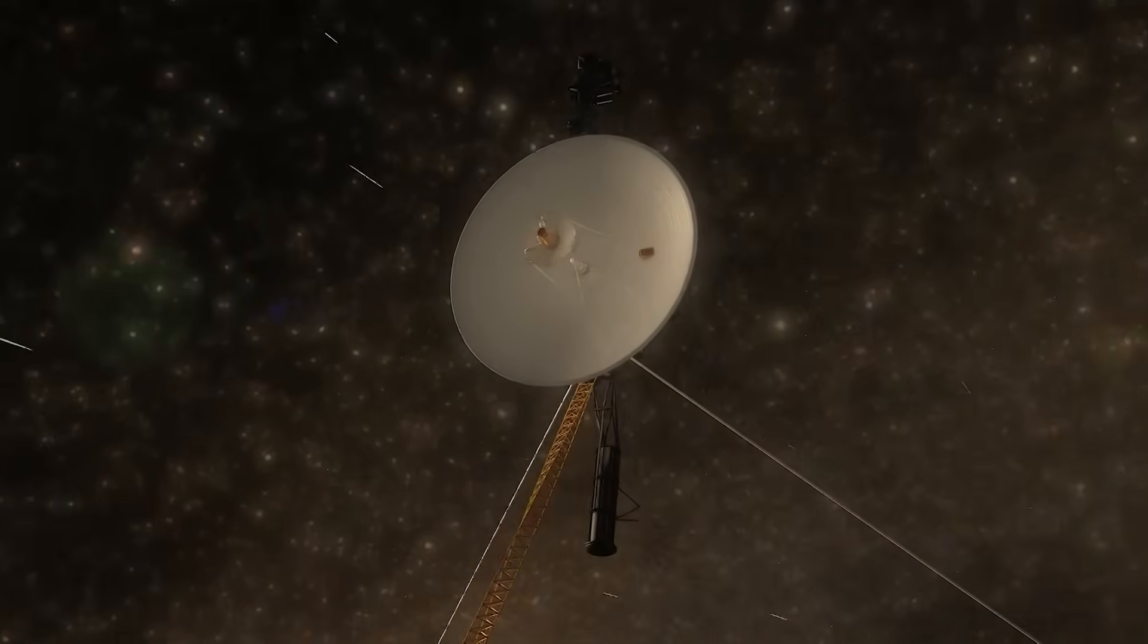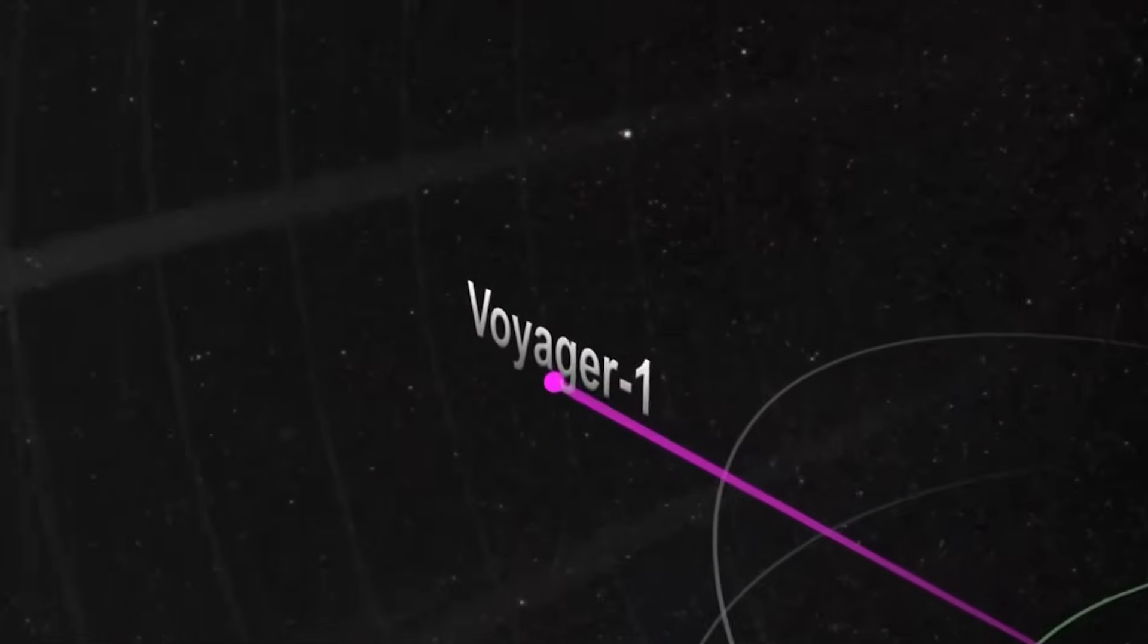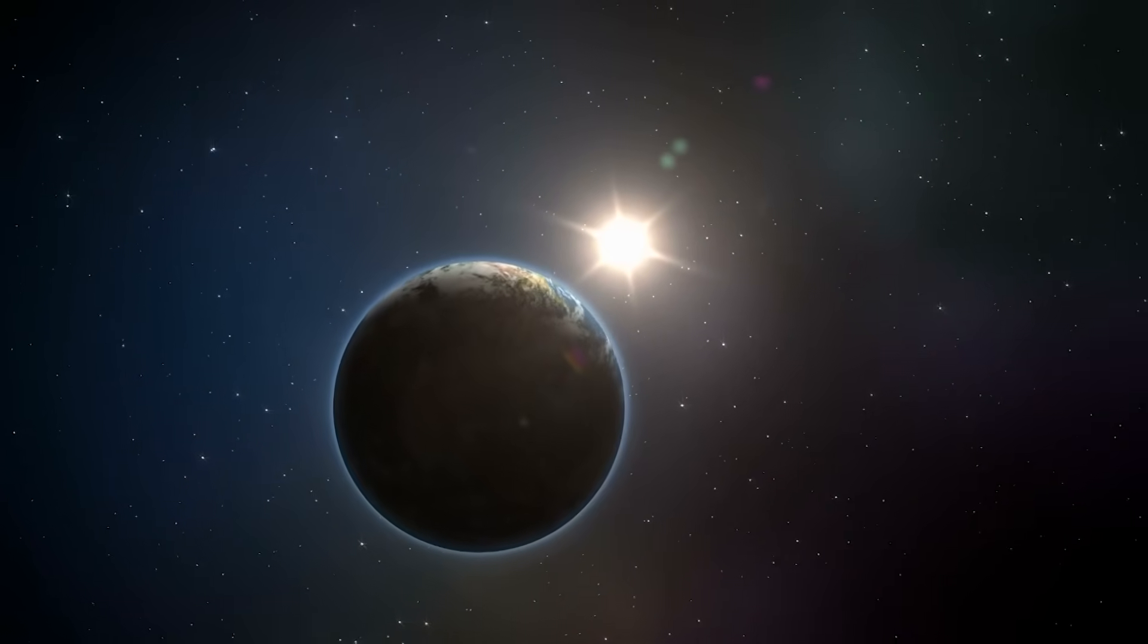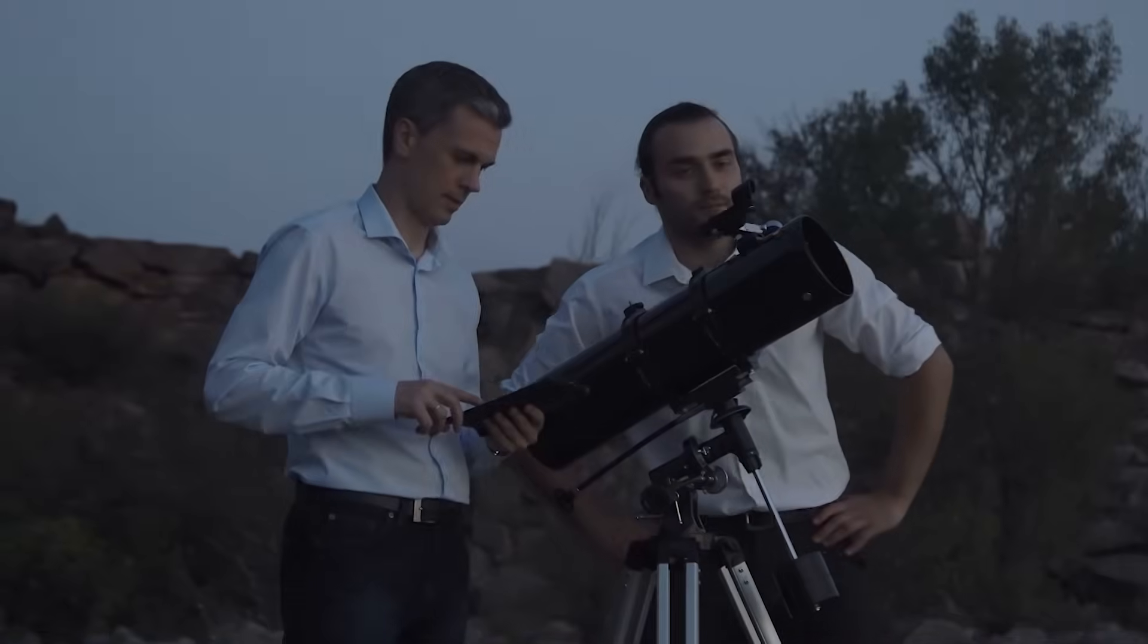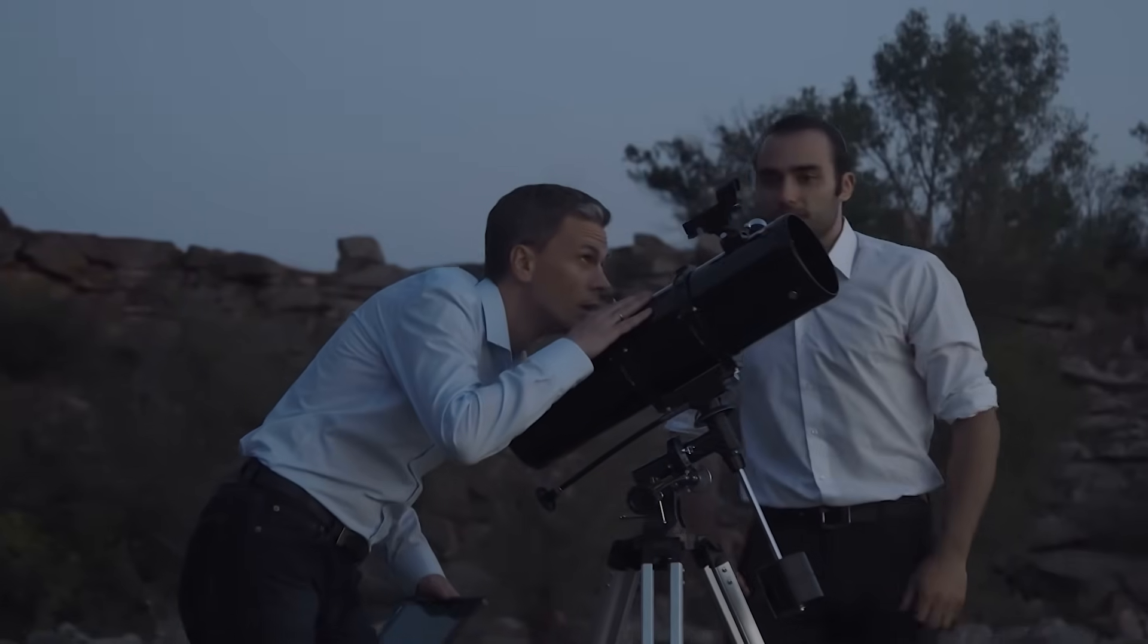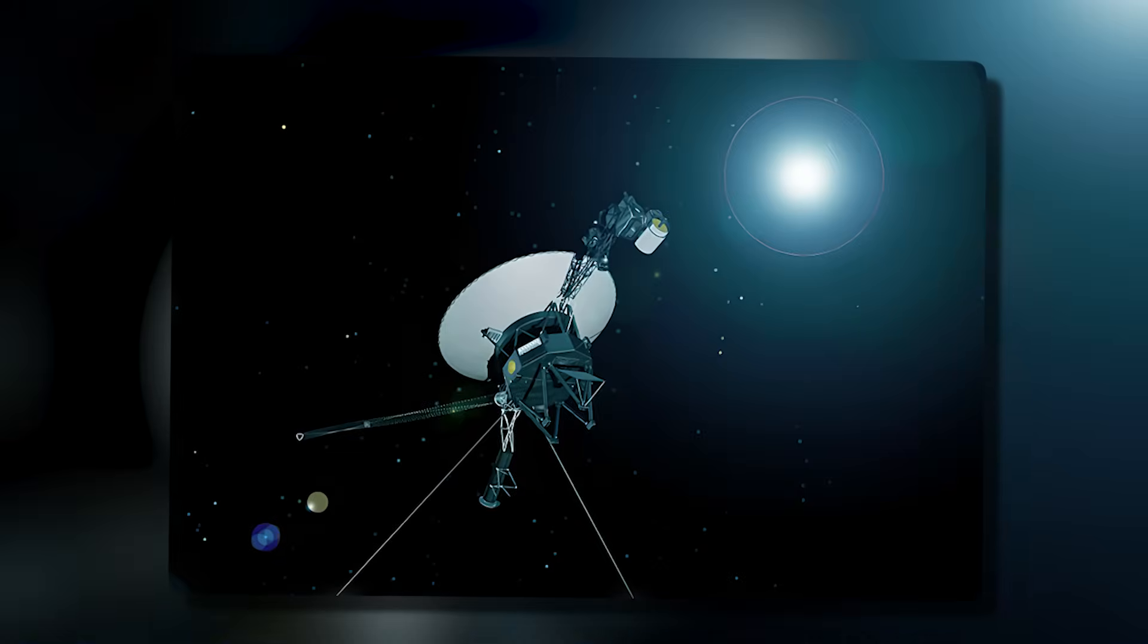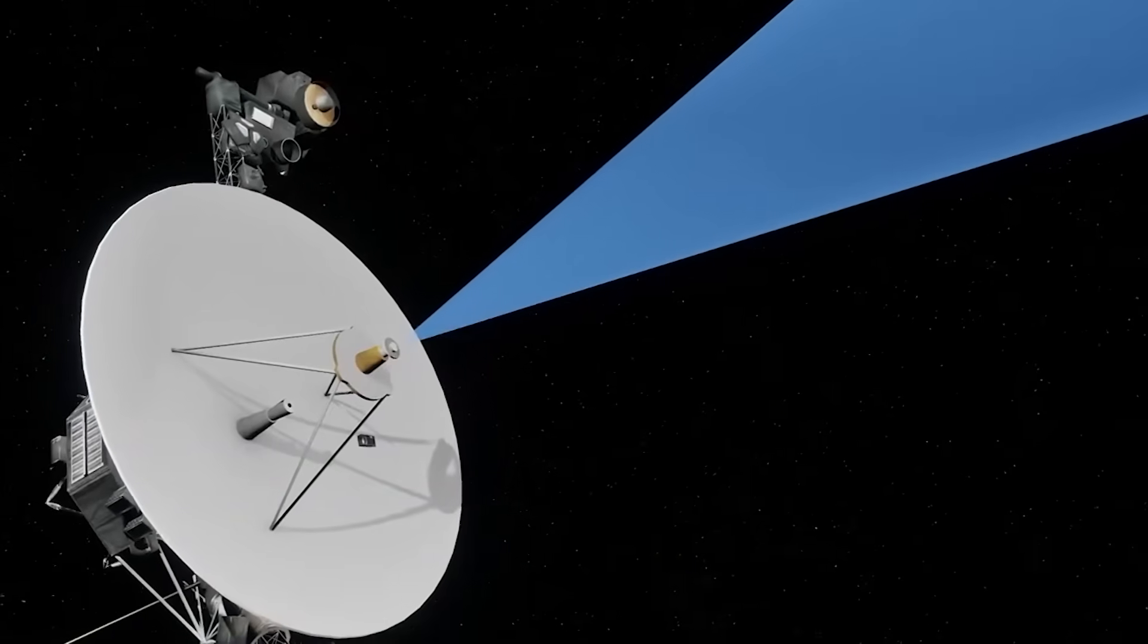This spacecraft, no larger than a compact car, has traversed the solar system and pierced through the heliopause into interstellar space. Recently, however, it has done more than just continue its lonely drift through the stars. It has made a detection that has rattled the scientific community. As it drifted farther into the galactic frontier, Voyager 1 recorded something inexplicable, an object unlike anything ever seen before.